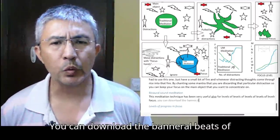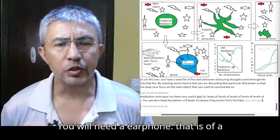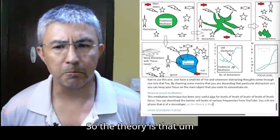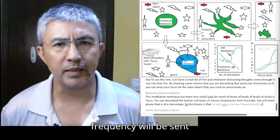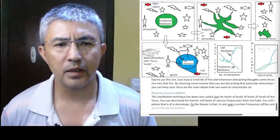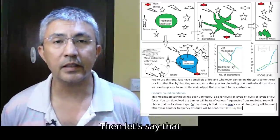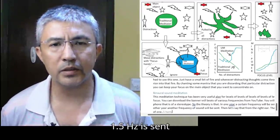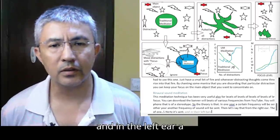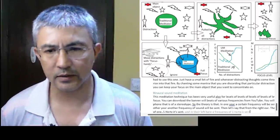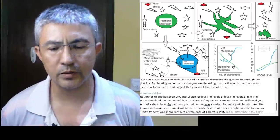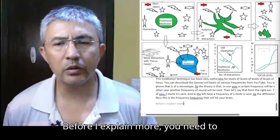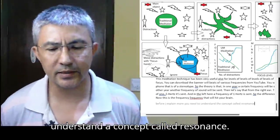This meditation technique has been very useful for me to move into the higher levels of focus. You can download the binaural beats of various frequencies from YouTube. You will need an earphone that is of a stereo type. So the theory is that in one ear, a certain frequency will be sent. And the other ear, another frequency of sound will be sent. Then let's say that from the right ear, the frequency of 1.5 Hertz is sent. And in the left ear, a frequency of 1 Hertz is sent. So the difference is 0.5 Hertz. Now, this is the frequency that will hit your brain.